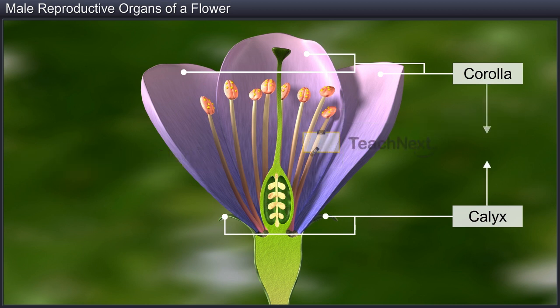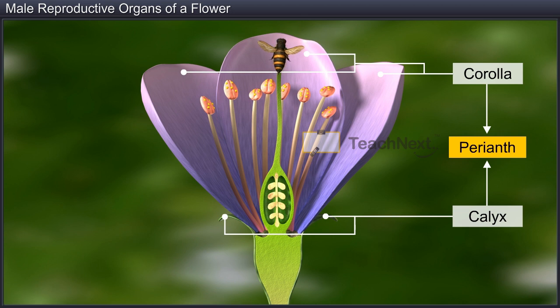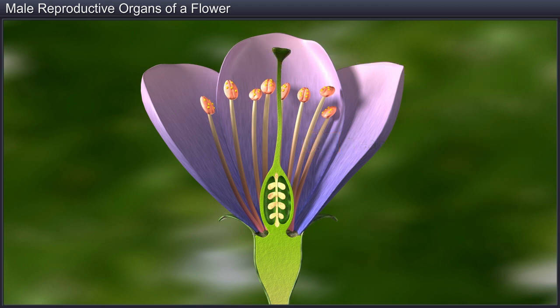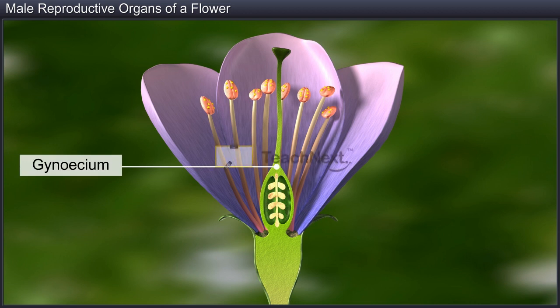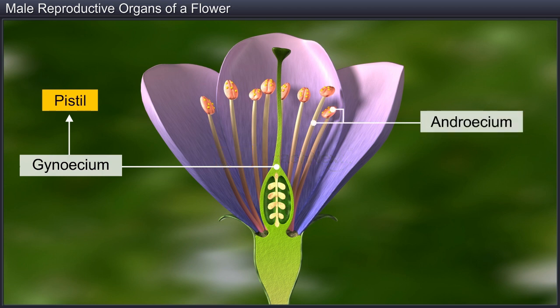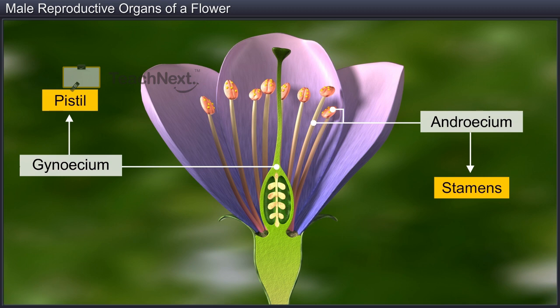The Calyx and Corolla, referred to as the Perianth, are bright and colourful to attract insect pollinators. The Gynoecium, which consists of one or many carpels or pistils, represents the female reproductive part, whereas the Androecium, which consists of a whorl of stamens, is the male reproductive part of the flower.